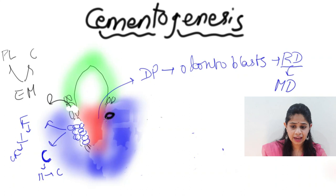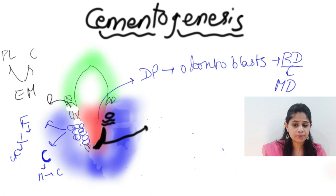The cementoblast cells orient parallel to the root surface and help in the deposition of cementum onto the mantle dentine. This cementum which is formed is the cementoid tissue, completing phase one — deposition of the homogeneous cementoid tissue.